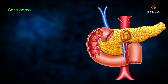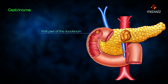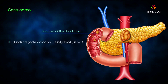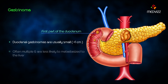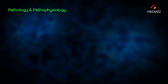Duodenal gastrinomas are predominantly found in the first part of the duodenum. Compared with pancreatic gastrinomas, duodenal gastrinomas are usually small — less than 1 centimeter — often multiple, and are less likely to have metastasized to the liver at the time of diagnosis.